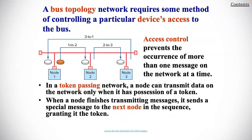A bus topology network requires some method of controlling a particular device's access to the bus. Access control prevents the occurrence of more than one message on the network at a time. In a token passing network, a node can transmit data on the network only when it has possession of a token. When a node finishes transmitting messages, it sends a special message to the next node in sequence, granting the token.